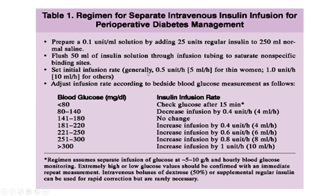Set the initial infusion rate. Generally, it should be 0.5 units per hour, or 5 mL per hour from the prepared 250 mL solution, for thin women. For other patients, use 10 mL per hour. Then adjust the infusion rate according to bedside blood glucose measurements. If glucose is controlled, decrease infusion by 0.4 units (4 mL) per hour. If glucose is 140 to 180 mg/dL — the target range — maintain current rate.